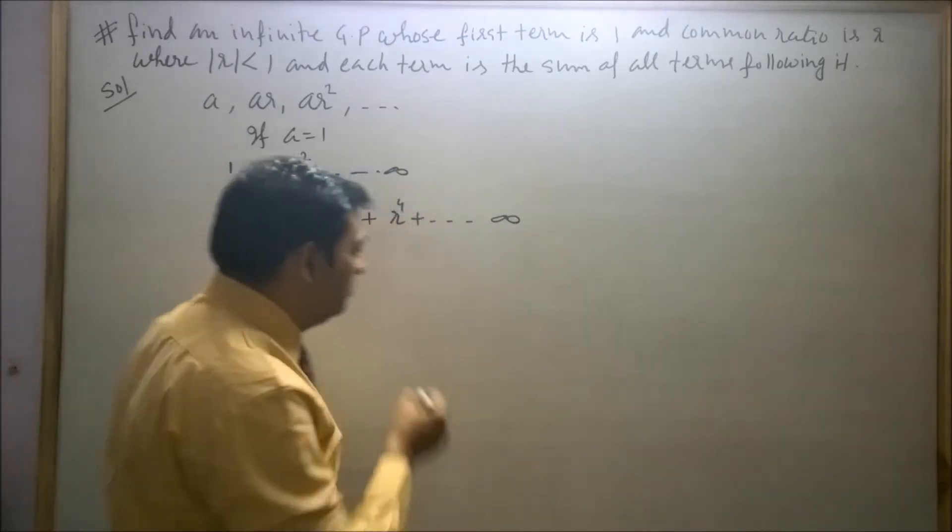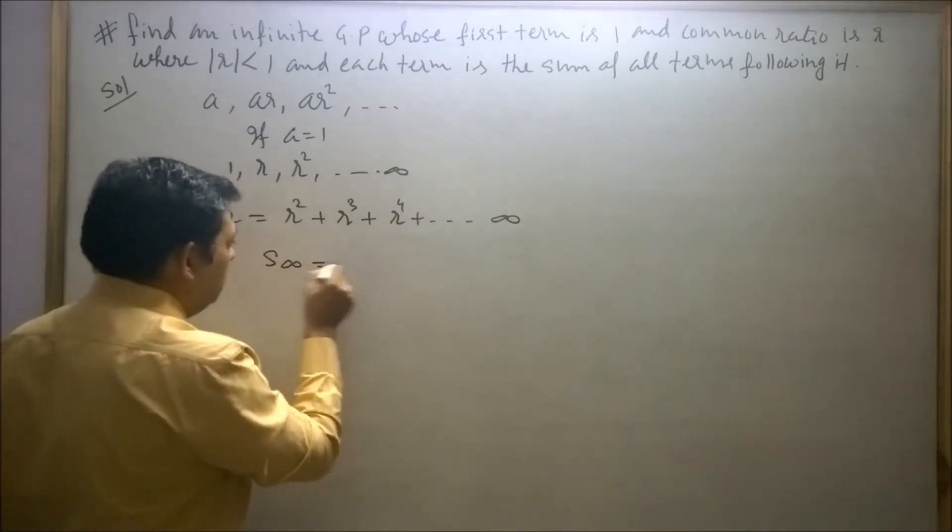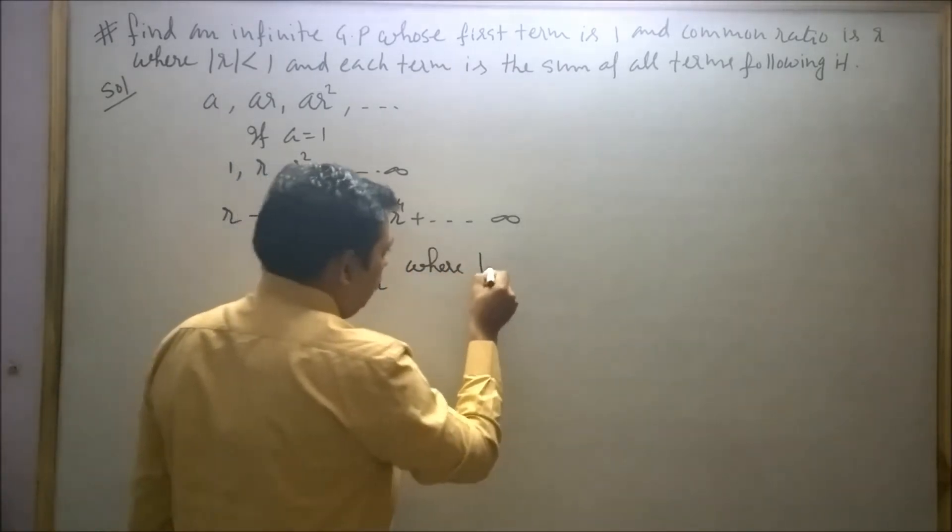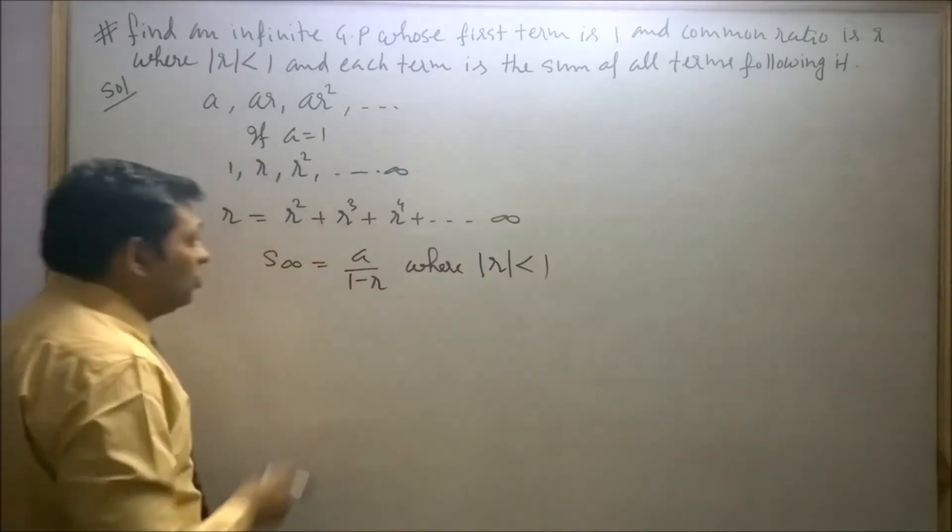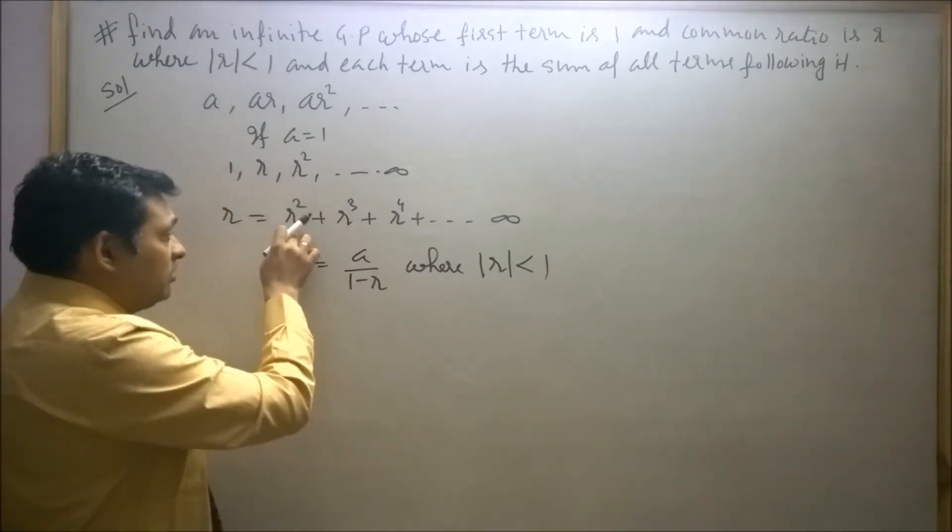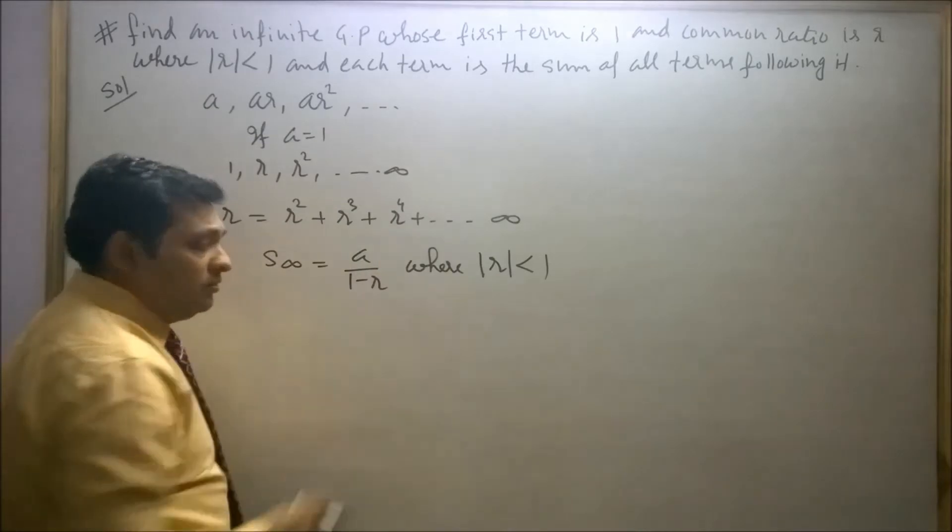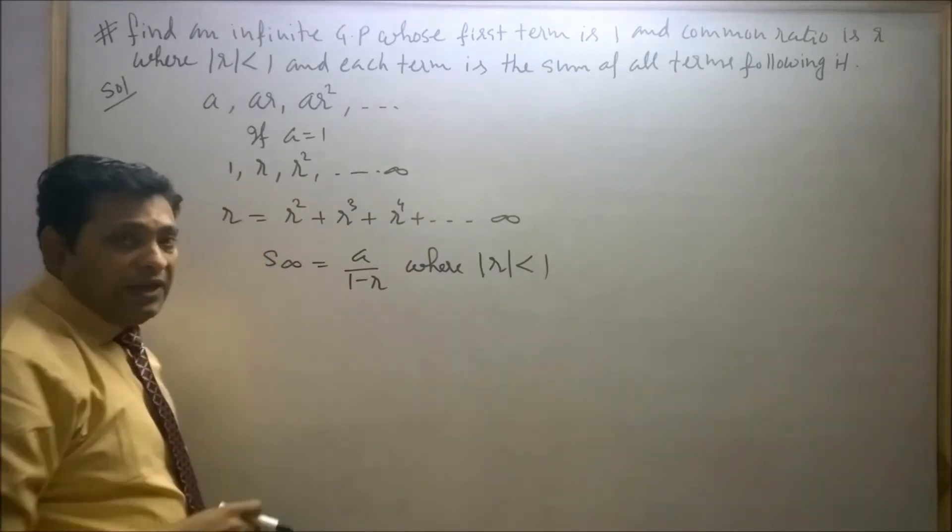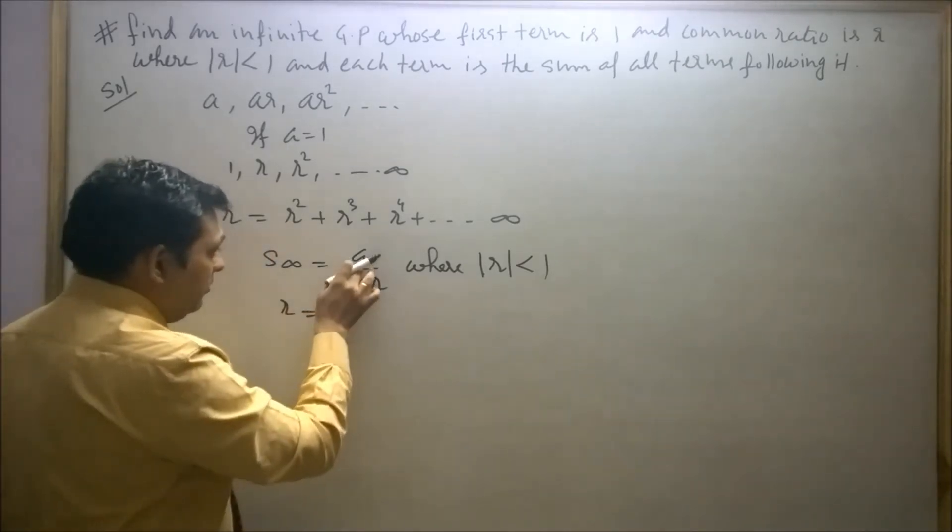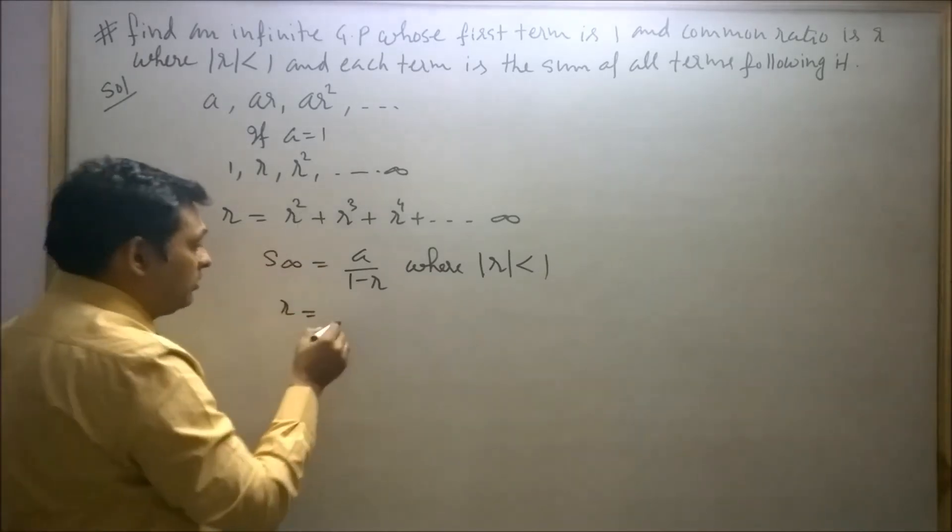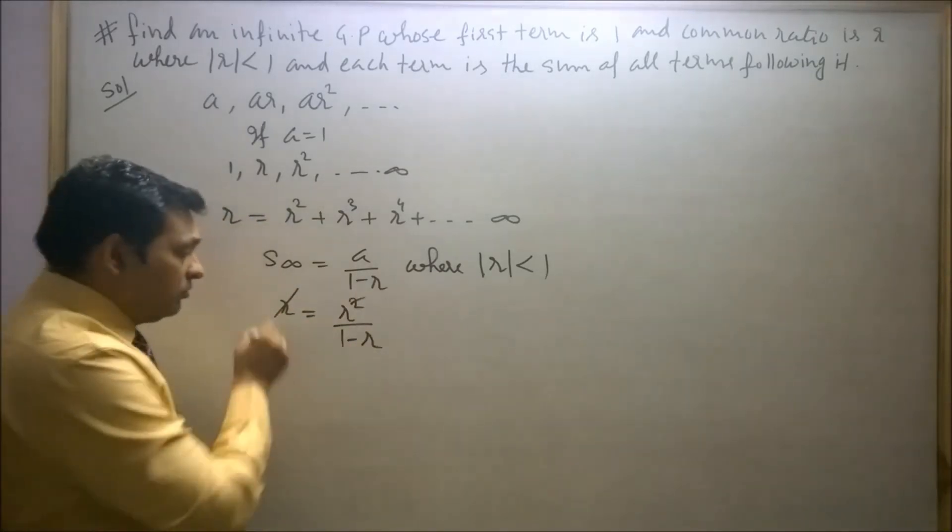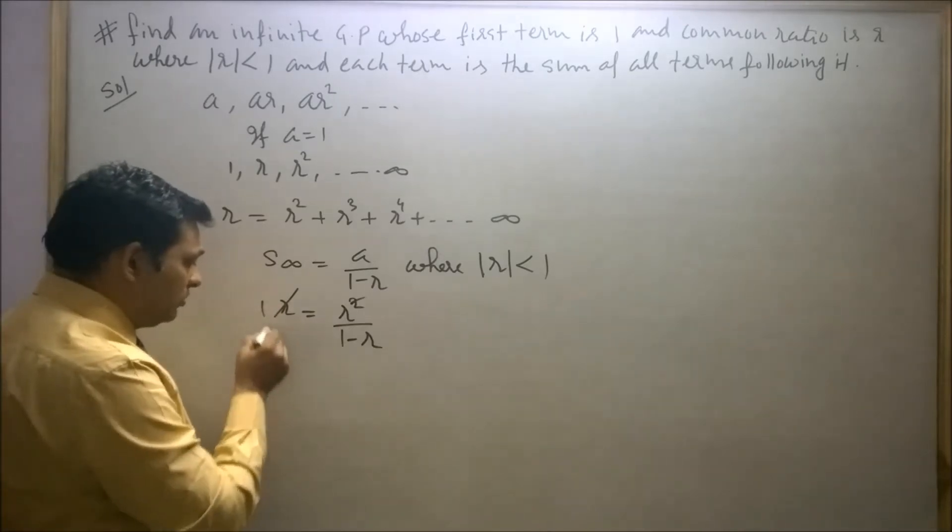We know that S infinity is equal to A upon one minus R where mod R is less than one. So the sum of all these terms is equal to one upon one minus R. Here first term is R square, so sum of all these terms is equal to R. This is S infinity, so S infinity can be represented as R square upon one minus R.